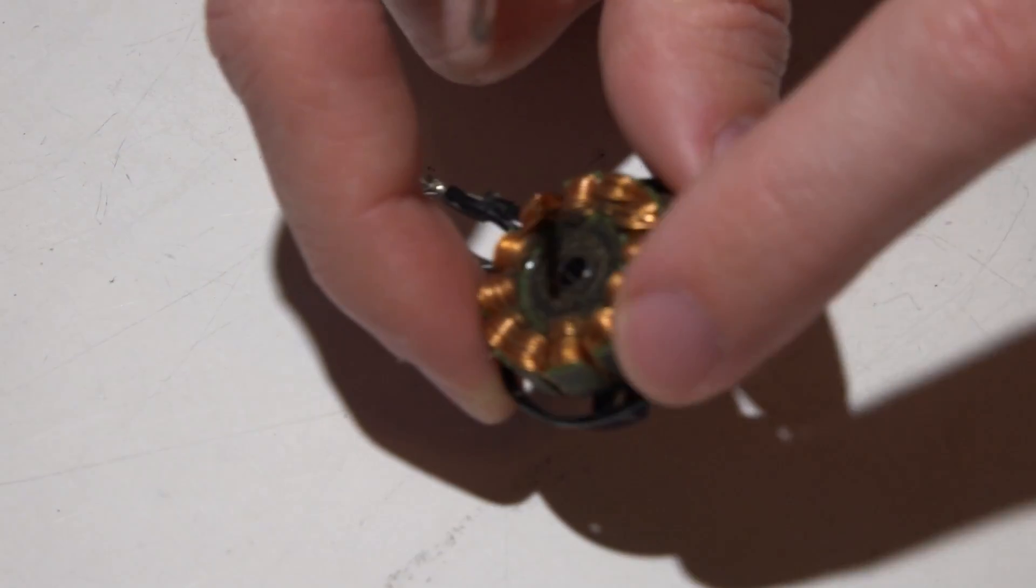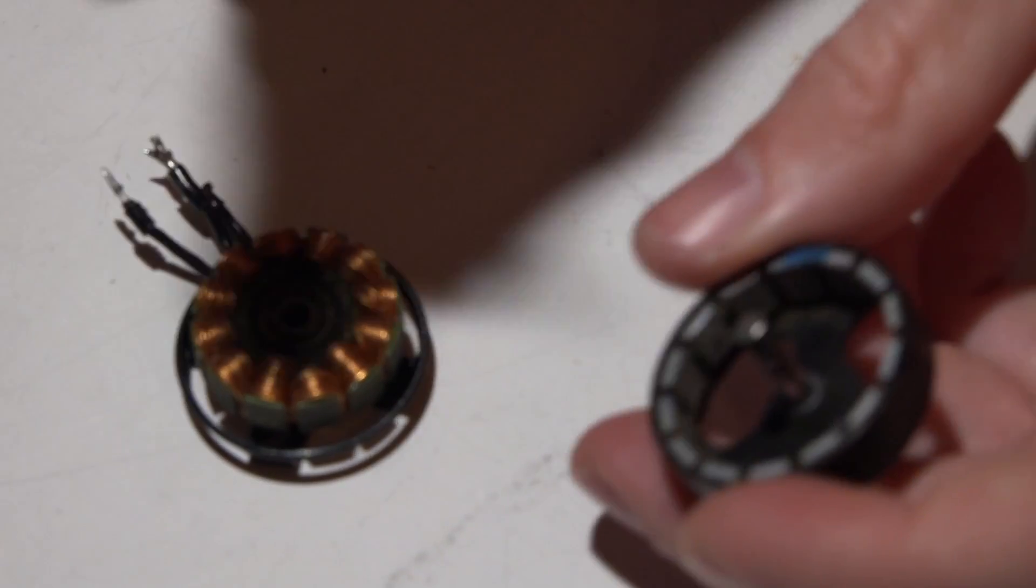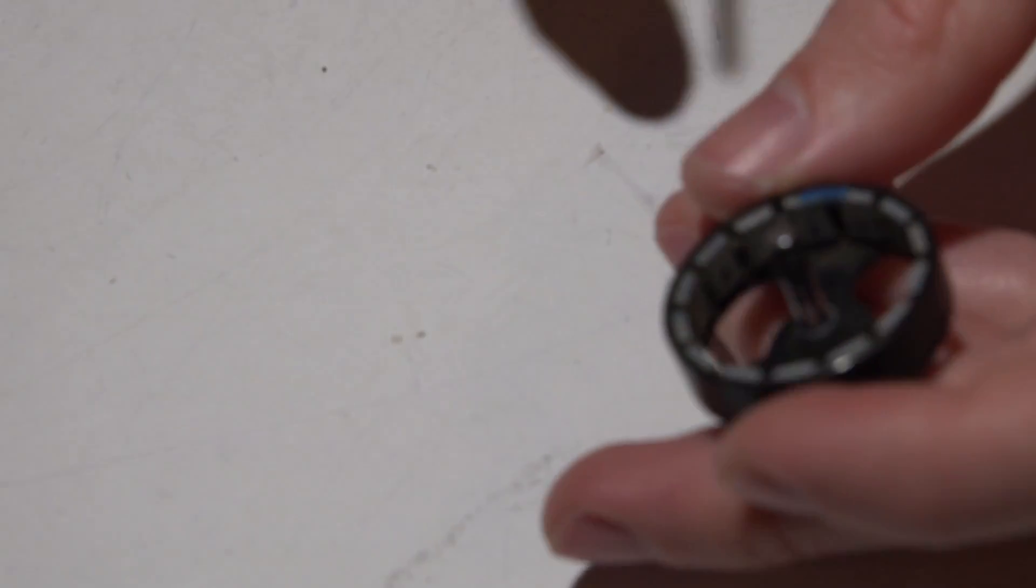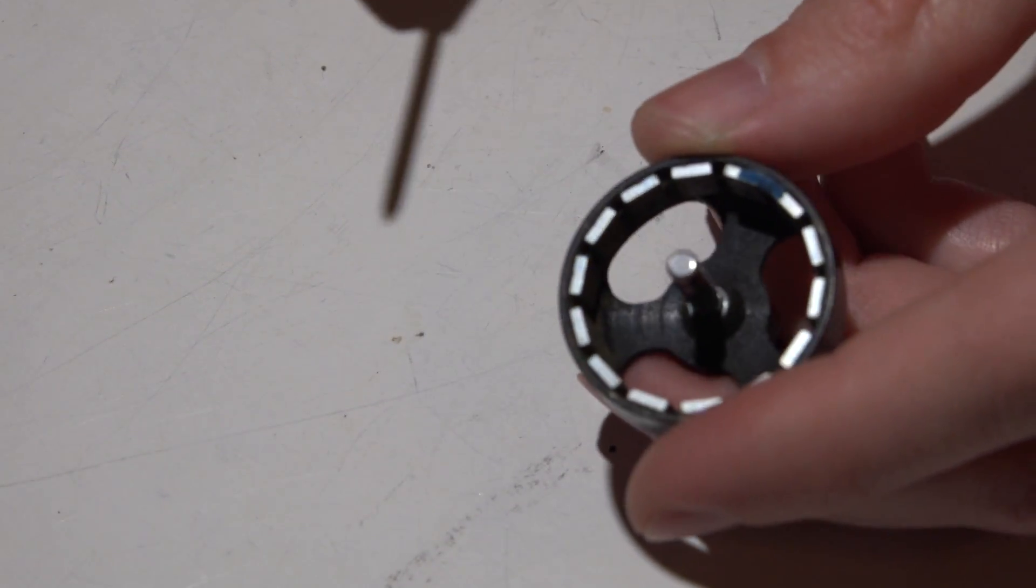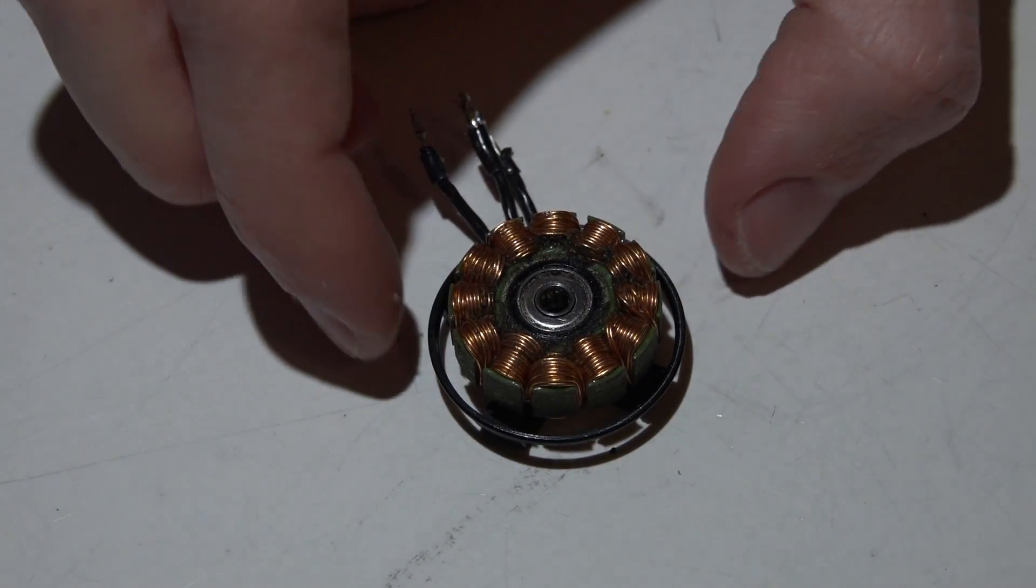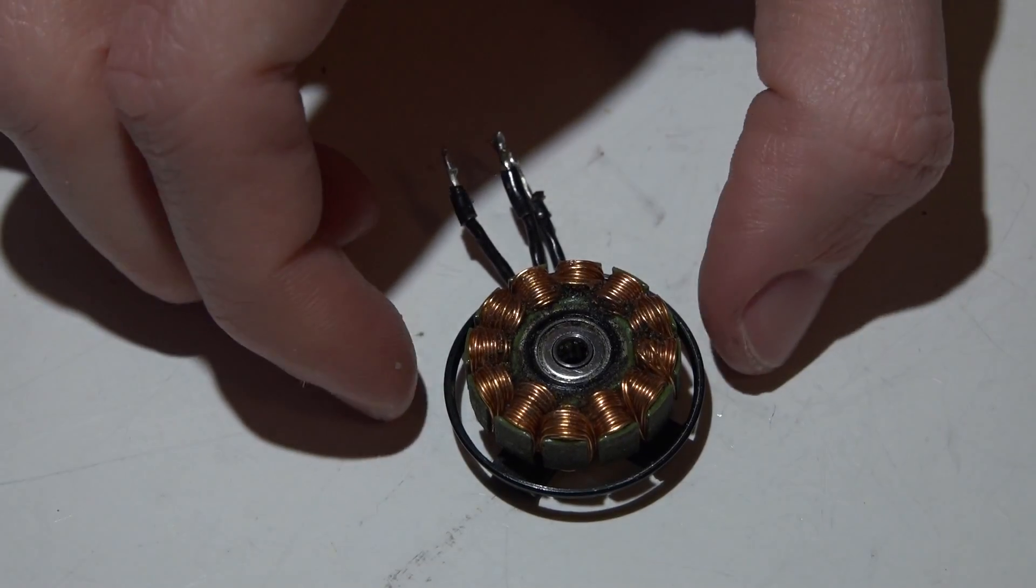I would not just glue it on because then it's going to be sticking out a little bit further than it should and could possibly come in contact with these magnets. I'm not going to go into that in this video. I might do a separate video, or you can just Google it. Okay, now we need to actually remove the bearings without a press.